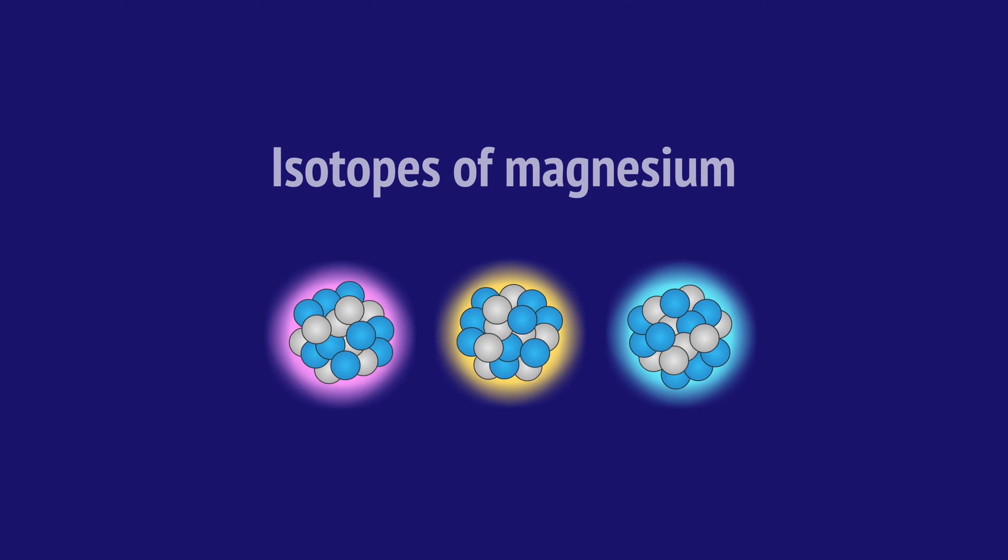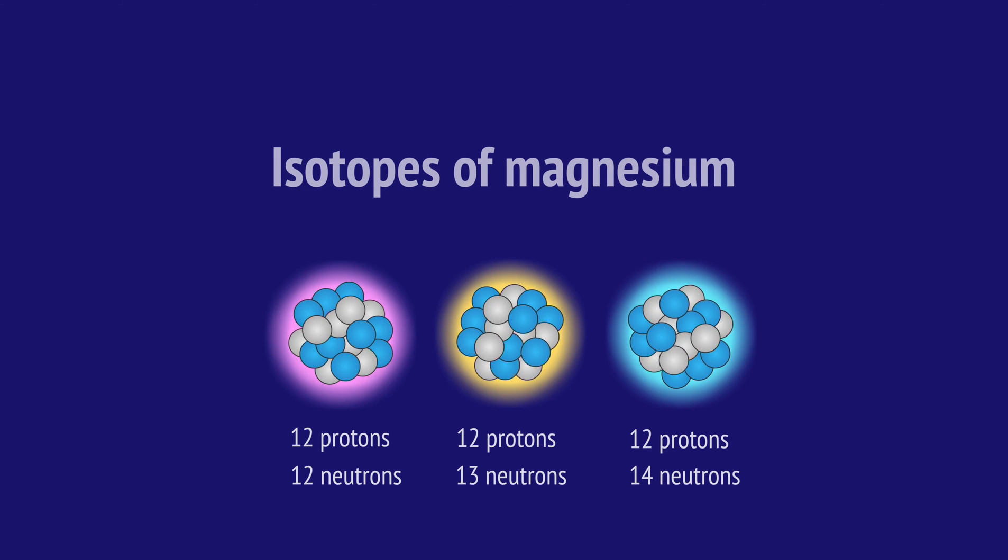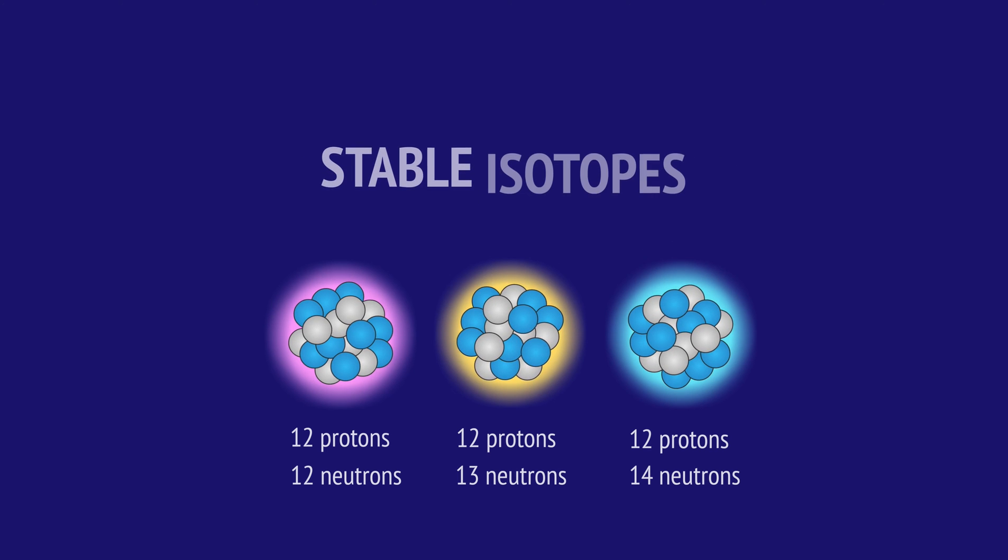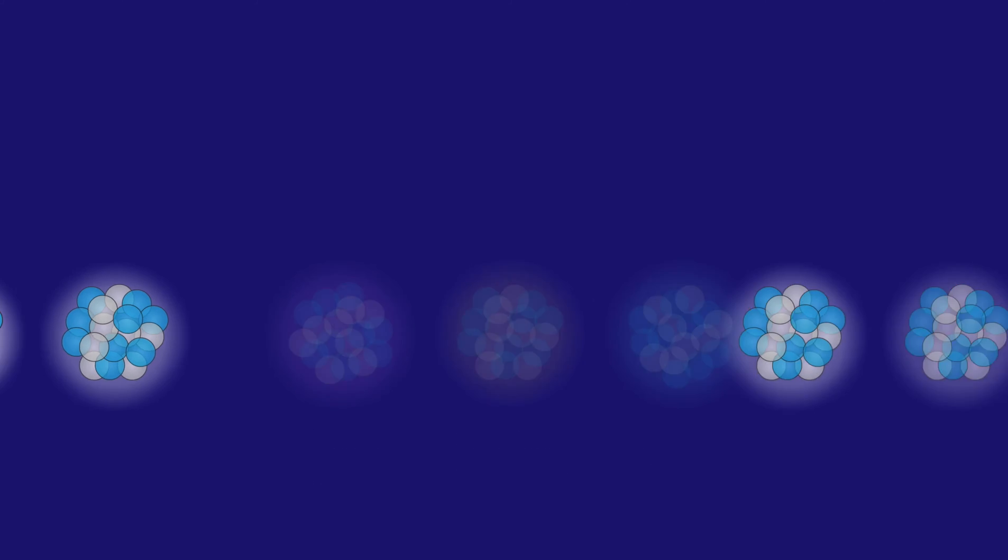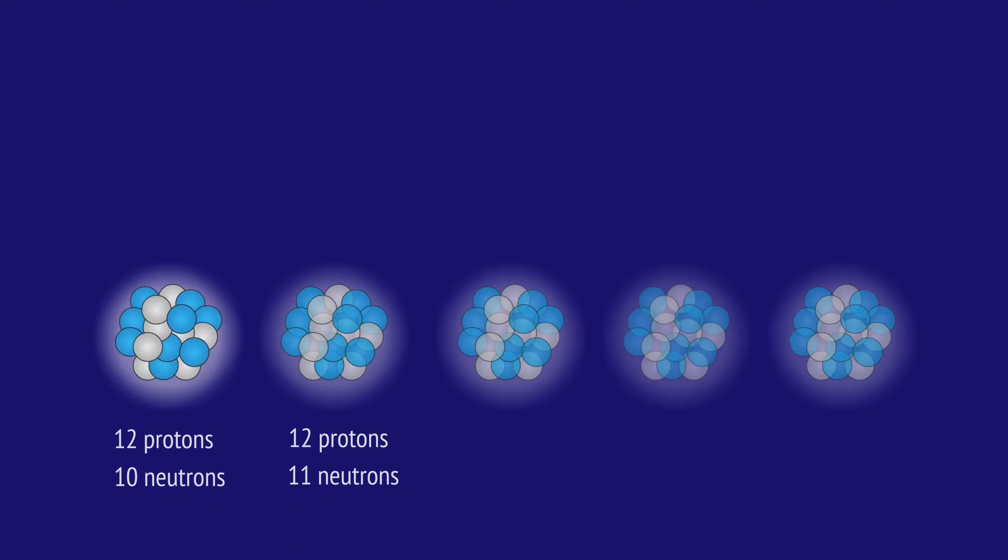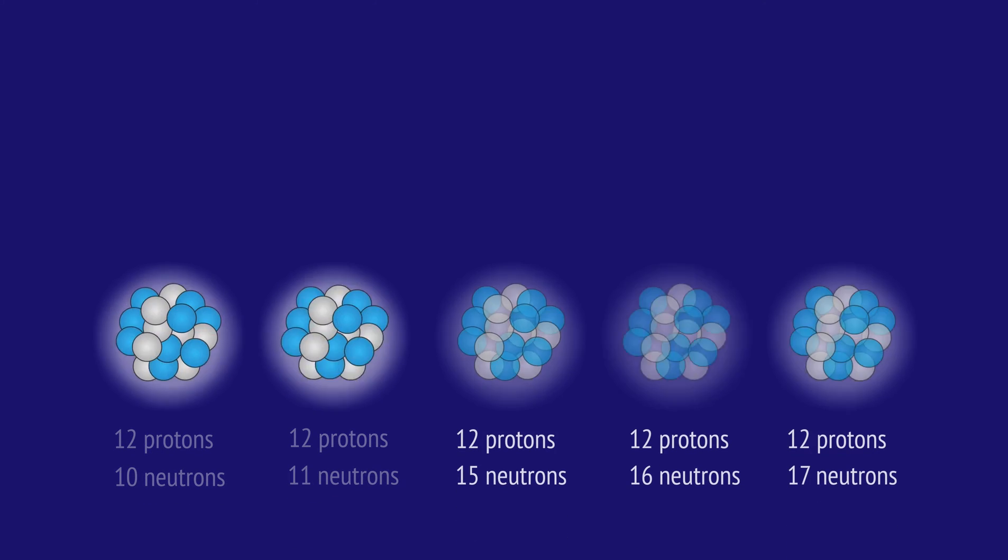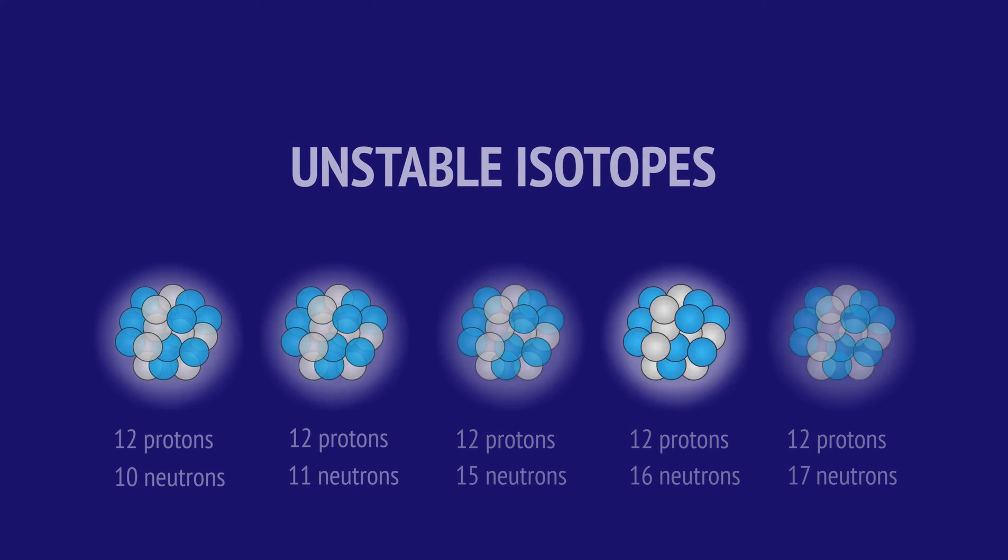These three isotopes represent the only stable combinations of protons and neutrons for magnesium atoms. We need either 12, 13, or 14 neutrons to keep the 12 protons bound together. If there are fewer than 12 or more than 14 neutrons, then the magnesium nucleus is unstable or radioactive.